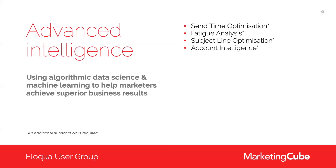We've been talking about send time optimization and subject line optimization. These two products are being wrapped into a product called Advanced Intelligence. The four bullet-pointed options on screen are part of what will become the Advanced Intelligence add-on to Eloqua. Some of you may be running send time optimization today as part of the controlled availability program and will continue to have access until September 2021, but beyond that there will be an additional subscription fee for the block of those four features — you buy the block, not individual features. We'll get more information and revisit this in the new year.